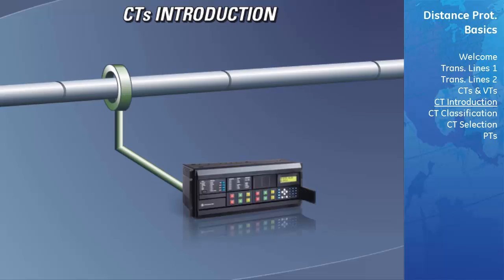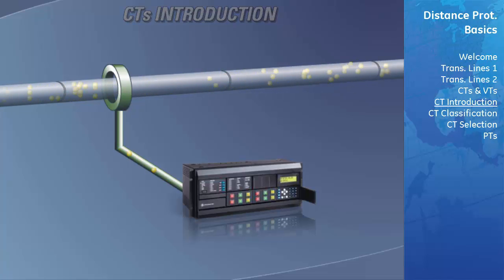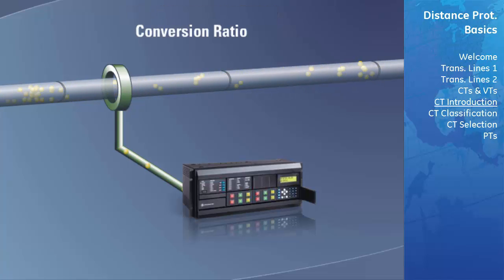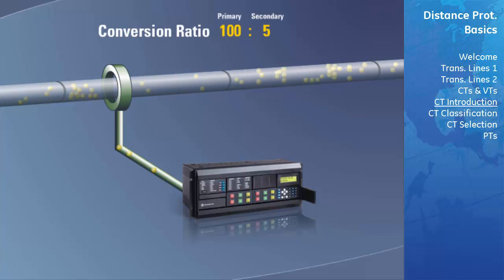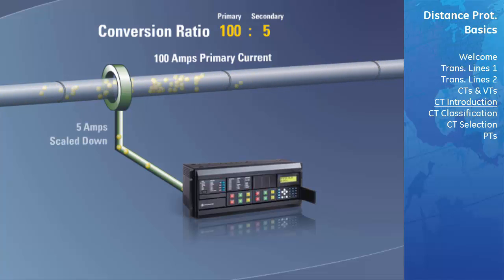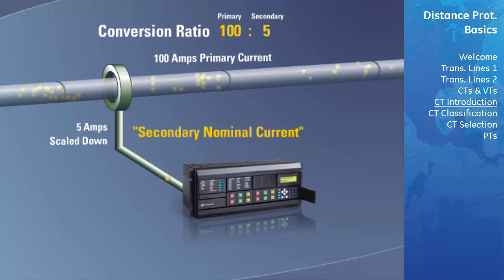The function of a current transformer, or CT, is to take a current flowing through a wire or cable and step it down to a magnitude that a protective relay can measure. A primary characteristic of CTs is their conversion ratio. In this example, our conversion ratio is 100 to 5, meaning that if 100 amps are passed through the primary phase wire, the CT will scale this down to 5 amps and direct it to the relay via the secondary windings. The 5-amp measure is known as the secondary nominal current.